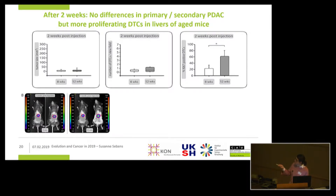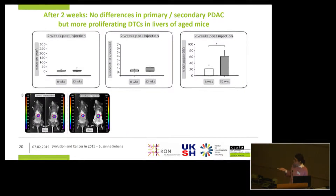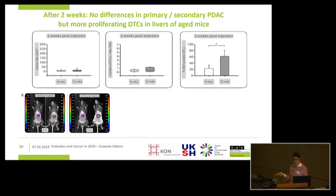Here you can see the results from the two-week time point. The primary tumors were very small in size, as you can also see on these bioluminescence imaging pictures, and most importantly, there were no differences between the two groups. We also could not detect any differences with respect to the number of disseminating tumor cells in the livers. However, the aged livers showed a higher percentage of proliferating cells within these disseminating tumor cells. Our conclusion is that aging does not impact the homing of the tumor cells, but impacts the proliferative activity of the cells that have colonized the organ.